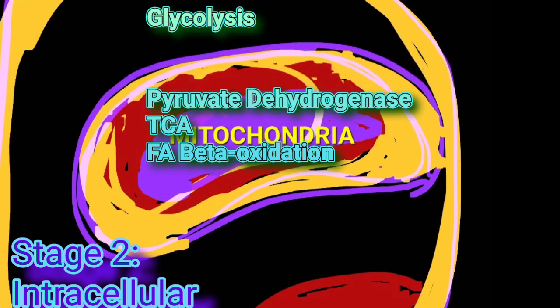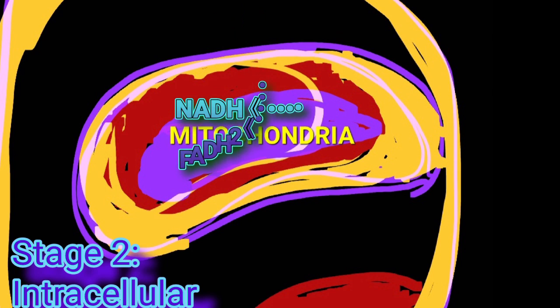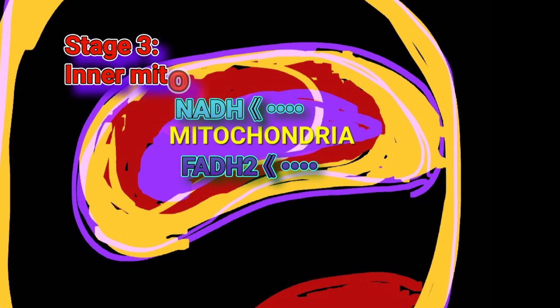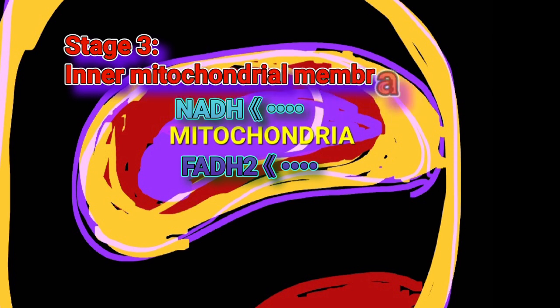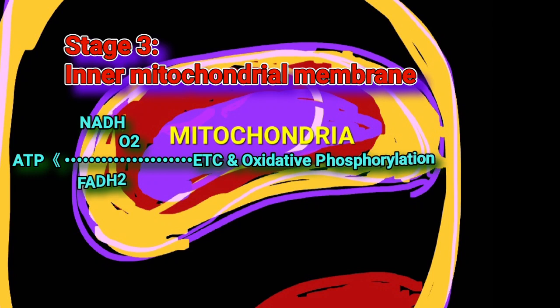The NADH and FADH2 produced by the three mitochondrial catabolic pathways will be present in the mitochondrial matrix and will be directly accessible for the third stage of catabolism, which occurs inside the inner mitochondrial membrane. The purpose of the third stage is to convert the high-energy molecules NADH and FADH2 into a usable form of energy — namely ATP — through the decoupled process of electron transport and oxidative phosphorylation.